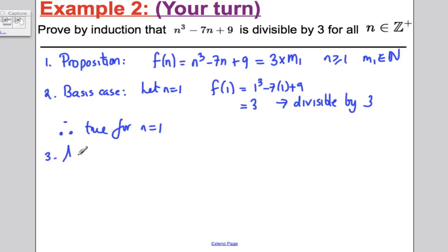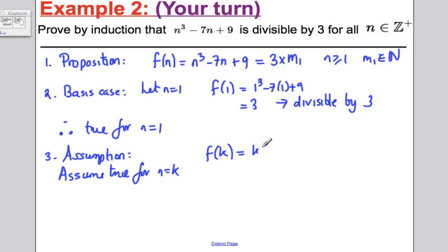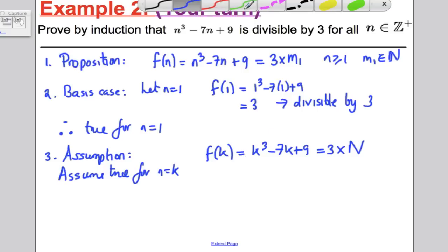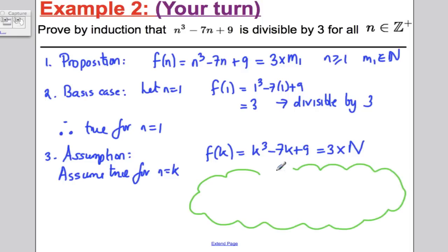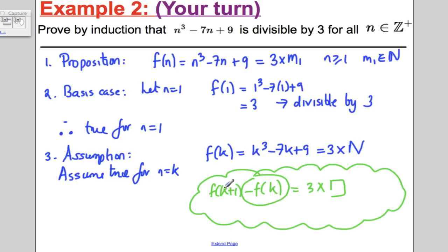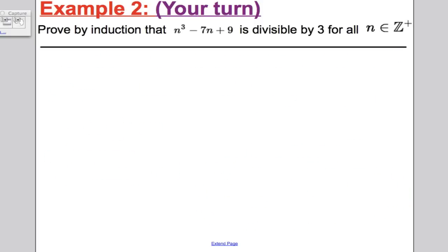Therefore true for n = 1. Step 3, the assumption: assume true for n = k, so f(k) = k³ − 7k + 9 is a multiple of 3, equal to 3N for some whole number N. Remember, if we can show that f(k+1) minus f(k) is 3 times something, then since f(k) is a multiple of 3, f(k+1) must also be a multiple of 3.